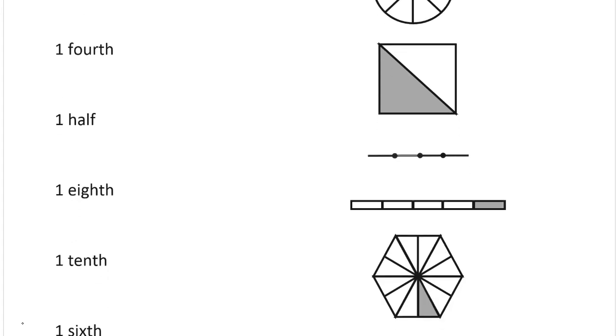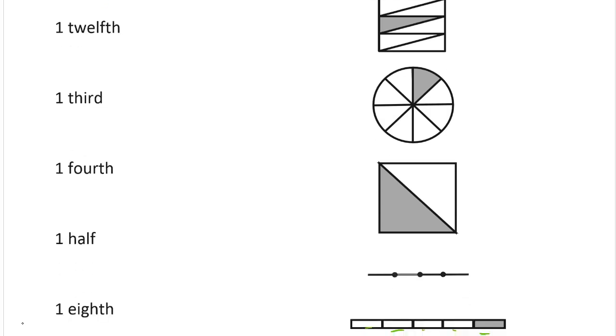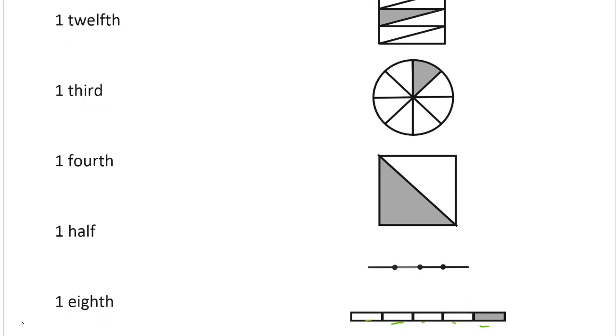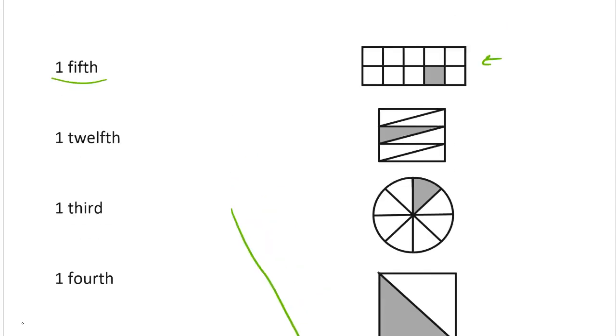This looks like a tape diagram. One, two, three, four, five. That's five pieces. And we need one fifth. So that's it. That's one of five pieces. So those are fifths. And one of them is shaded. So it's one fifth. All right, there we go.